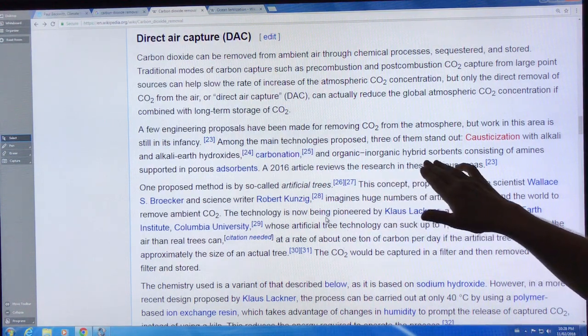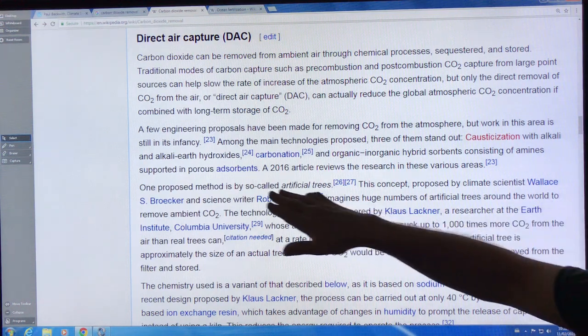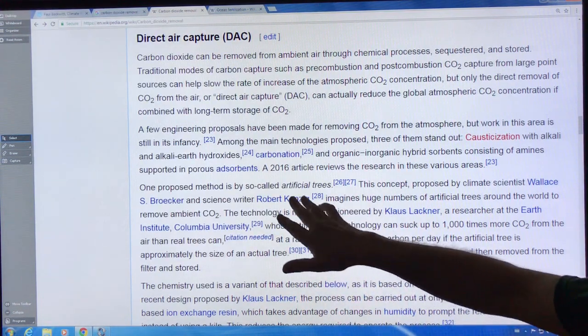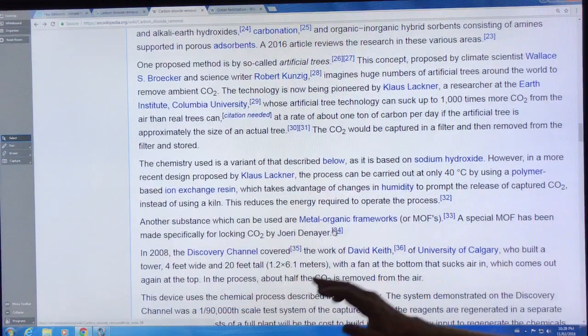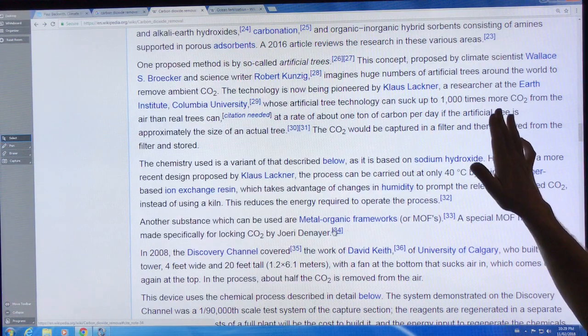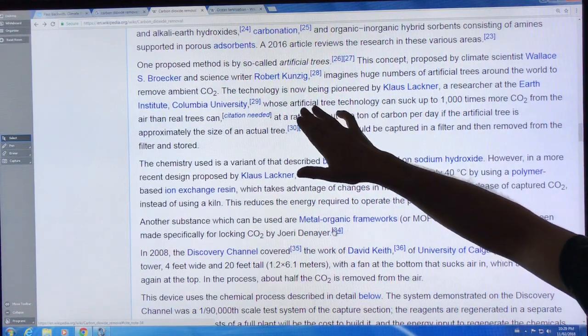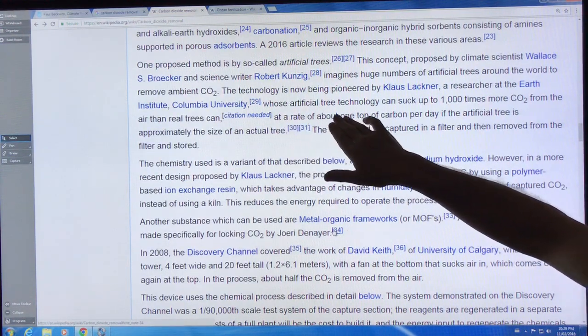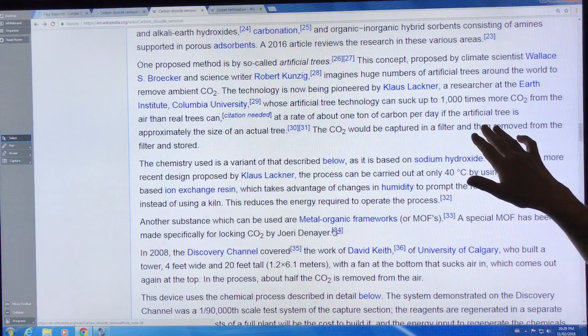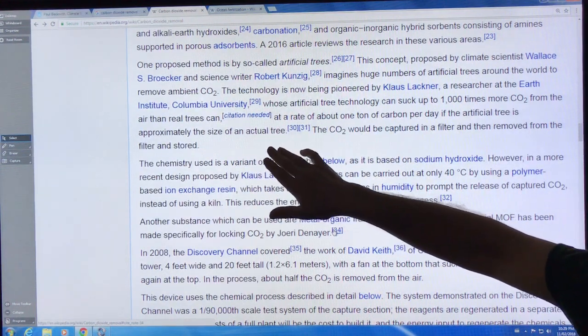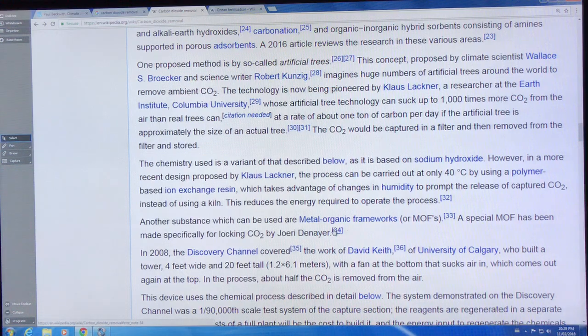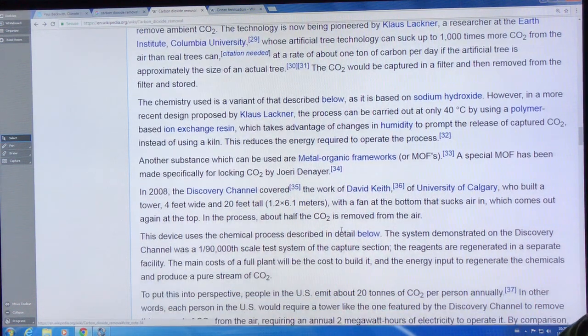There's different organic, inorganic sorbents to absorb the CO2, and porous absorbents where the CO2 goes inside the material. Artificial trees is a term that covers these concepts. The idea is having huge numbers of these things around the world to remove ambient CO2.